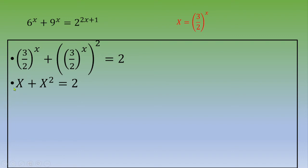Then you get capital X squared plus capital X minus 2 equals 0.